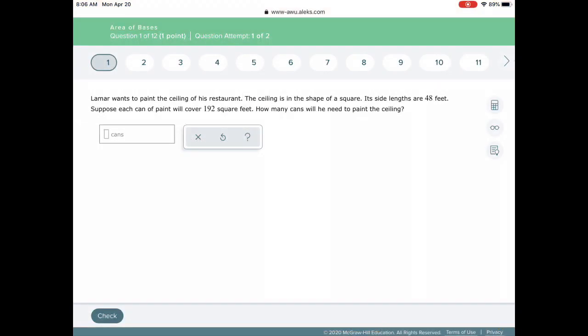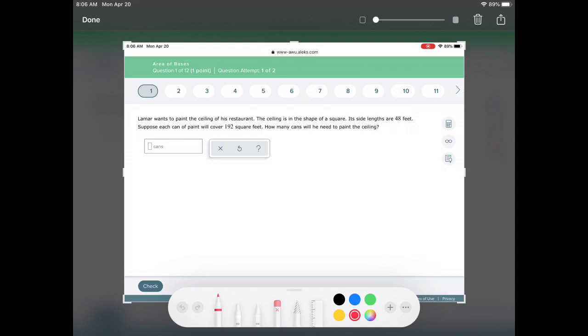So let's go ahead and take a look at some of the types of problems we'll see using these formulas. So Lamar wants to paint the ceiling of his restaurant. The ceiling is in the shape of a square, and its side lengths are 48 feet. And it says, suppose each can of paint will cover 192 square feet. How many cans will be needed to paint the ceiling? I'm going to take a screenshot of this real quick so we can write on top of this here.